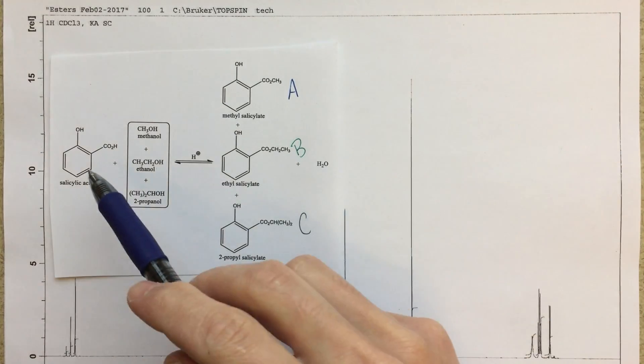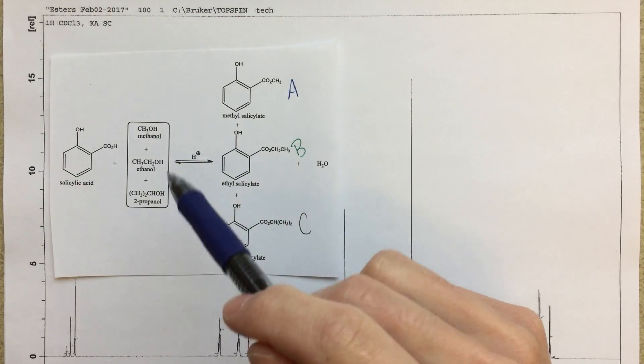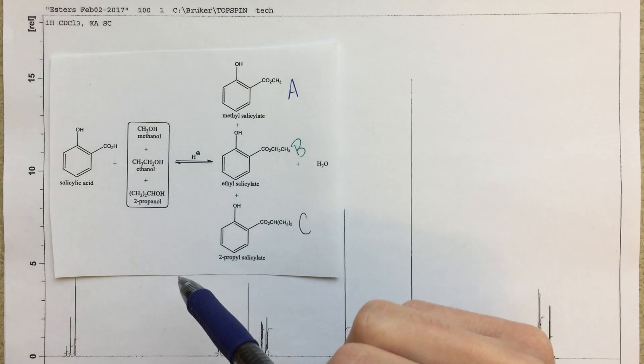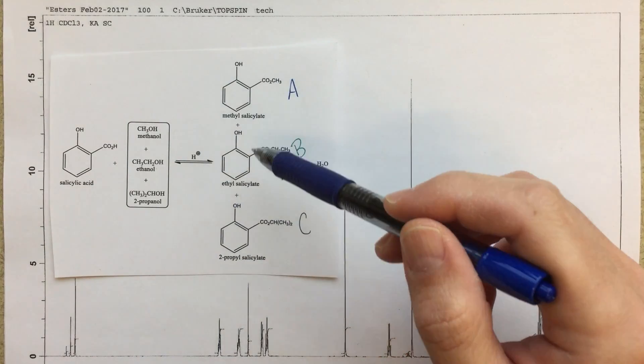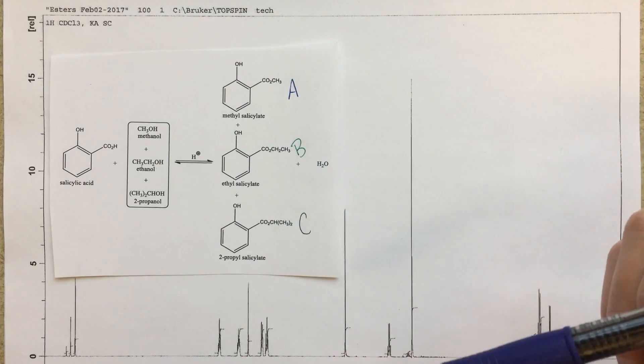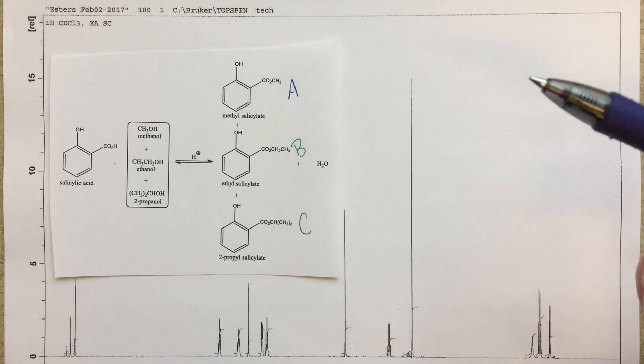What we have is a chemical reaction between salicylic acid and three different alcohols: methanol, ethanol, and isopropanol. They're going to form a mixture of products—methyl product, ethyl product, and isopropyl product.